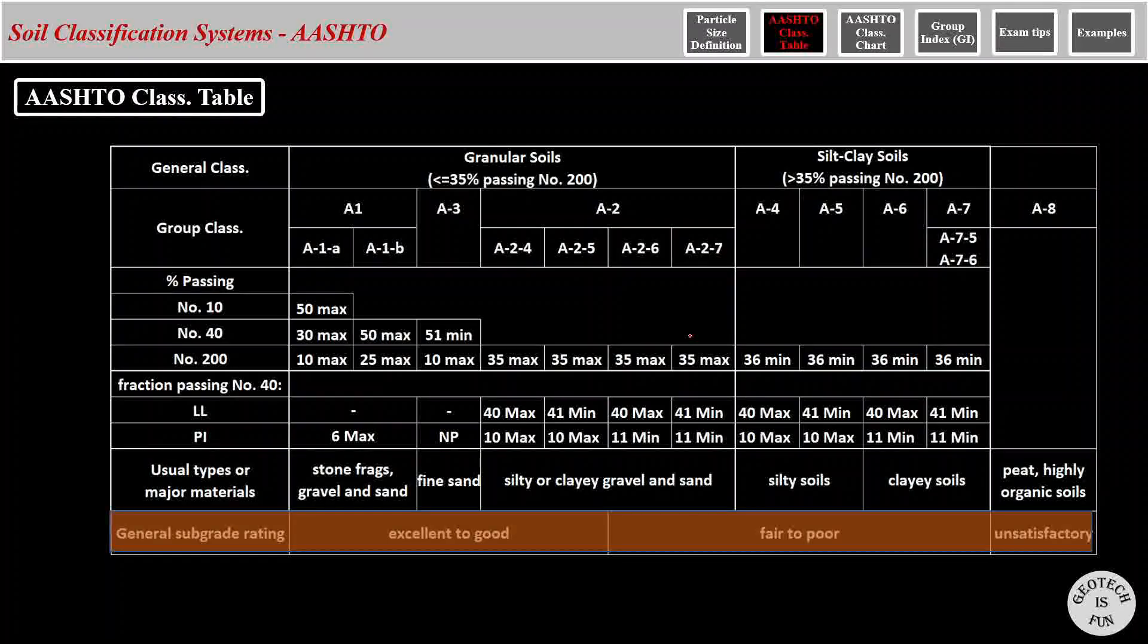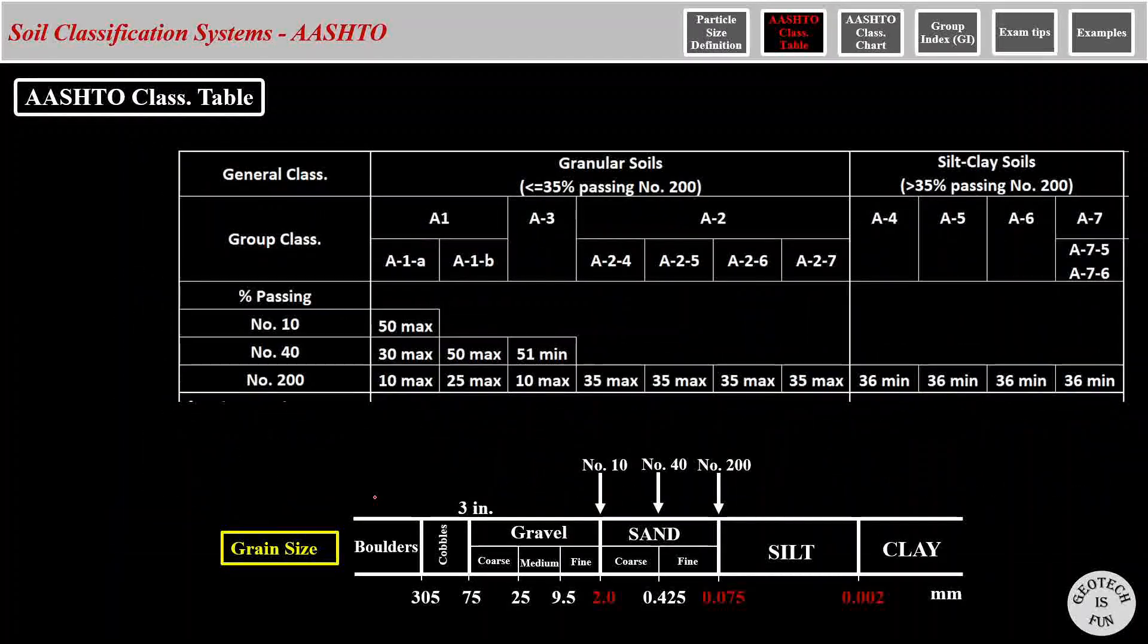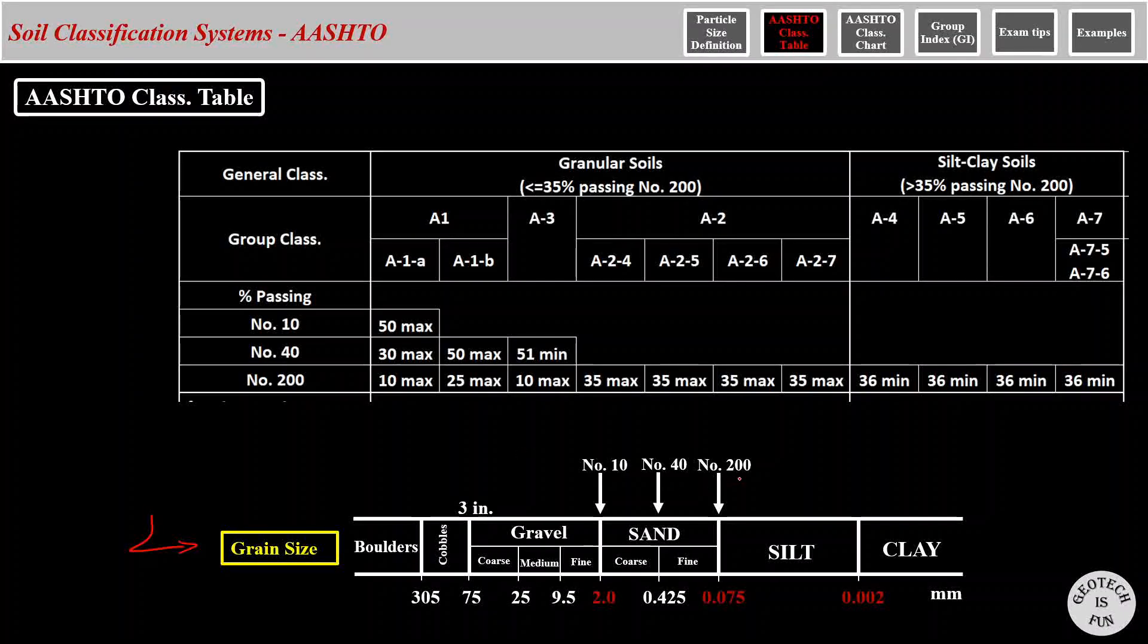Now let's take a closer look at different parts of the table, starting with the grain sizes. You just learned, based on AASHTO, sieve number 200 is the boundary between silty and clay soils, and gravelly and sandy soils. Now the question is, what percentage of the material, if passed through this sieve, we have either of these soil types. You intuitively might think it's 50%, but it is not. It is 35%.